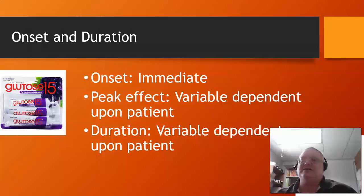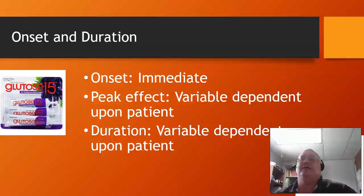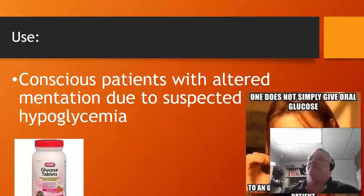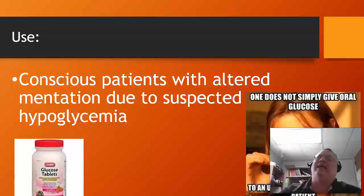The onset is almost immediate. The effect and duration kind of varies on the patient and how fast they absorb it. But usually 15 grams is enough to get the patient out of trouble. It will bring up their sugar enough where they can get further carbohydrates in their system. These are fast-acting — that's why we like them a lot.